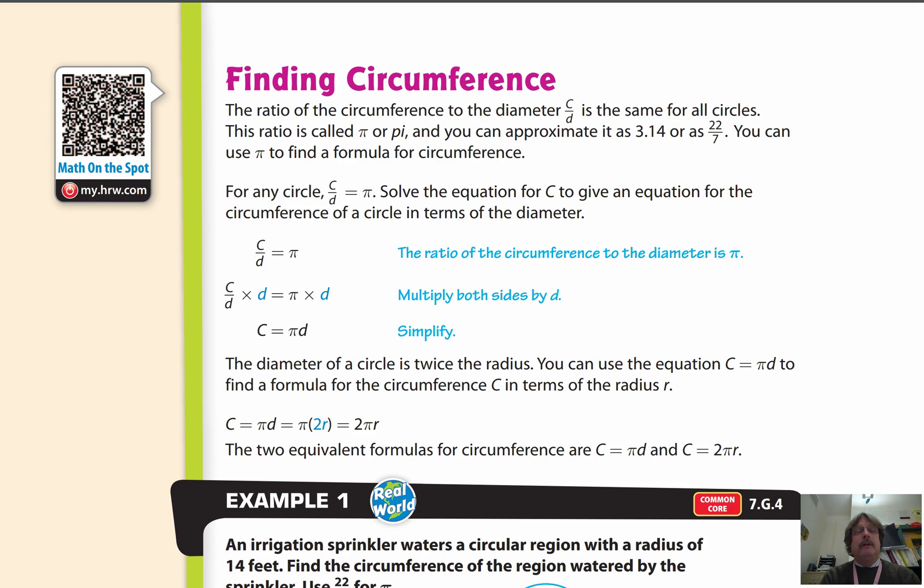So on the next page here, we're talking about finding the circumference, and here's a key point I want to highlight to you. It says the ratio of the circumference to the diameter, so that's C over D, is the same for all circles. This ratio is the same, so here's the ratio, C over D, is the same for all circles, and that ratio is called pi. So a lot of us have heard that, and it's approximately 3.14 or 22 over 7. You can use either one of those.